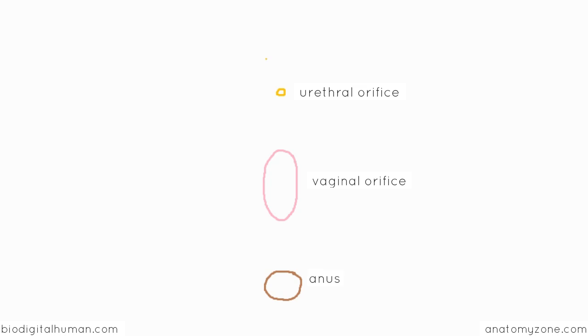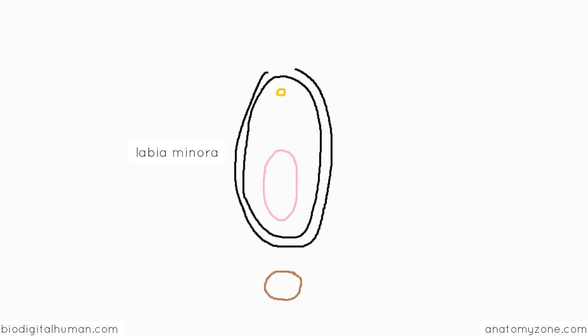So the urethral orifice and the vaginal orifice are surrounded by two thin folds of skin called the labia minora. So I've just drawn these folds on here. The singular of labia minora is labia minus. These are also known as the inner lips or the inner labia.